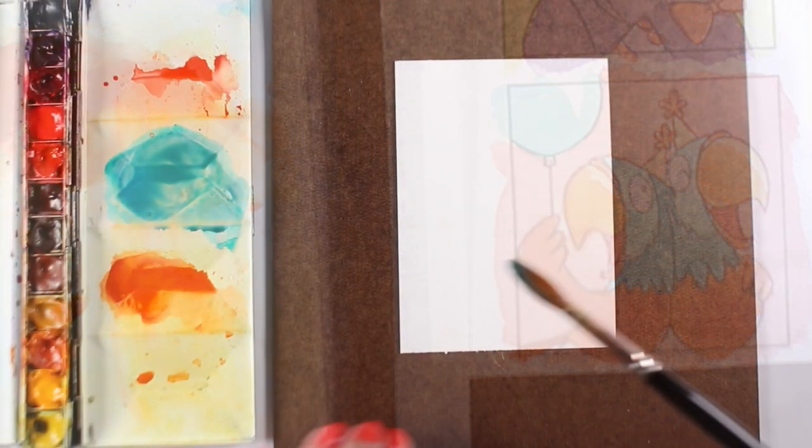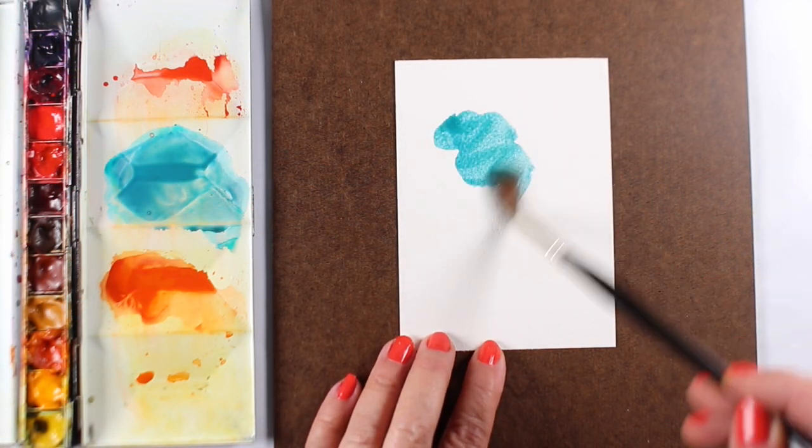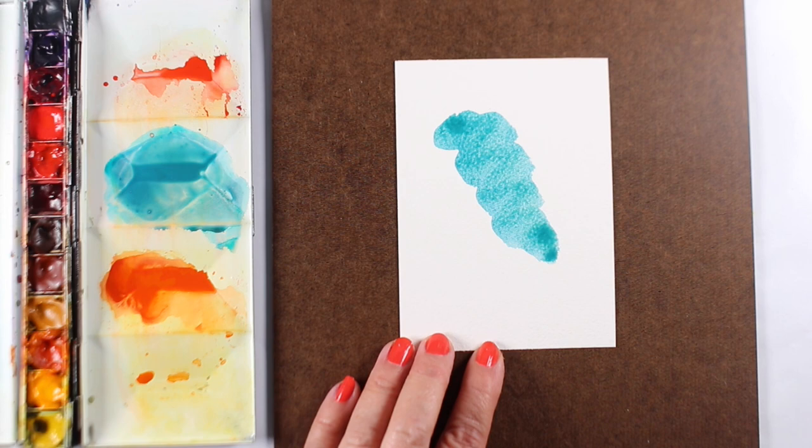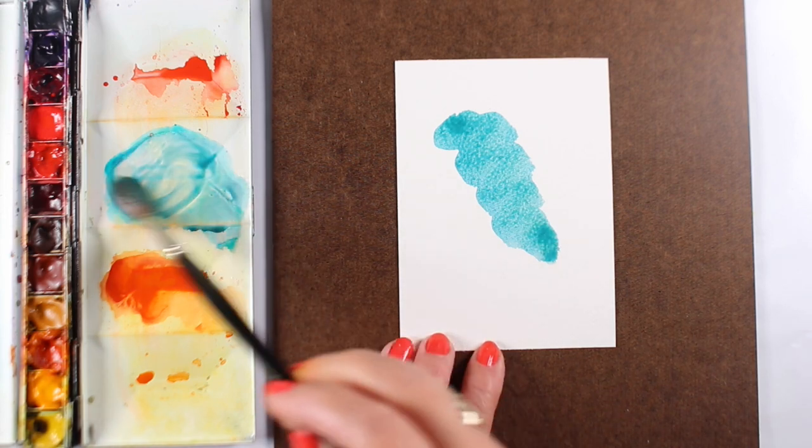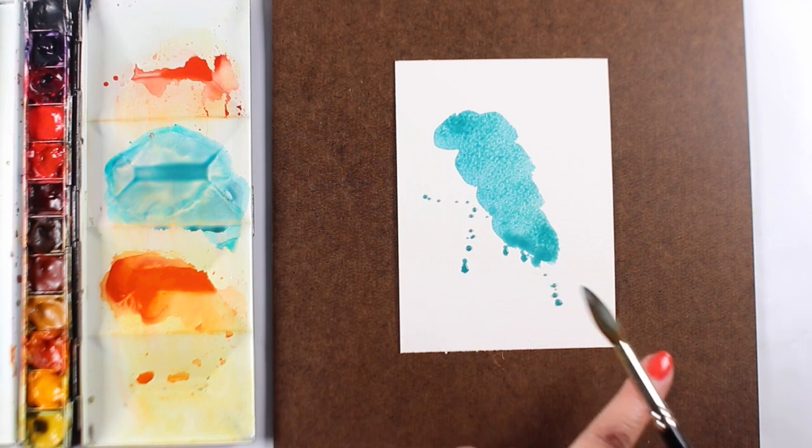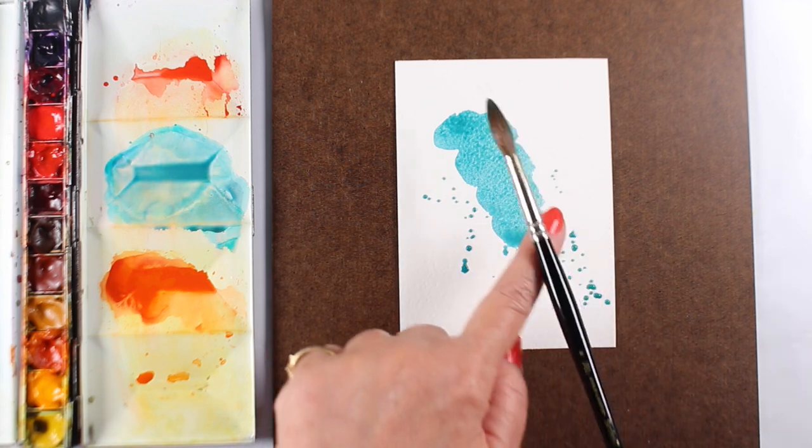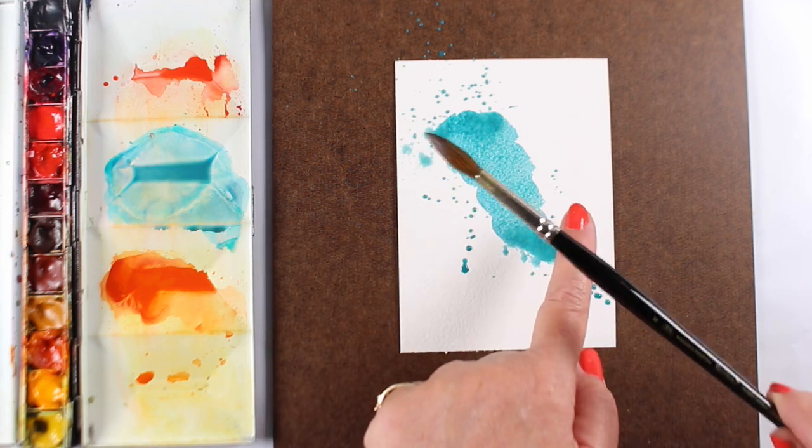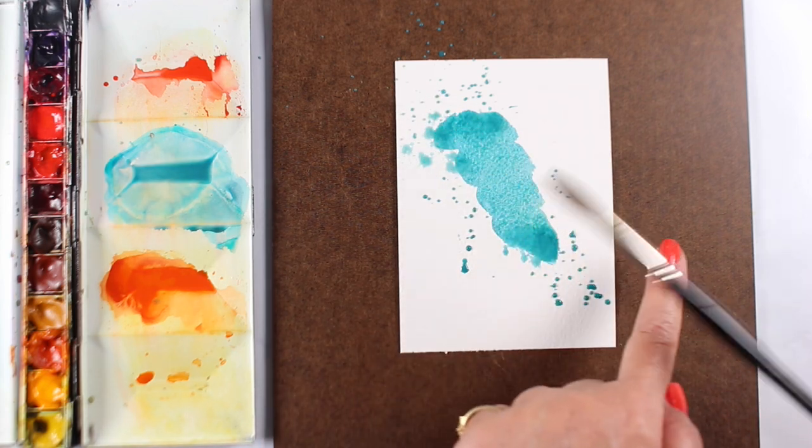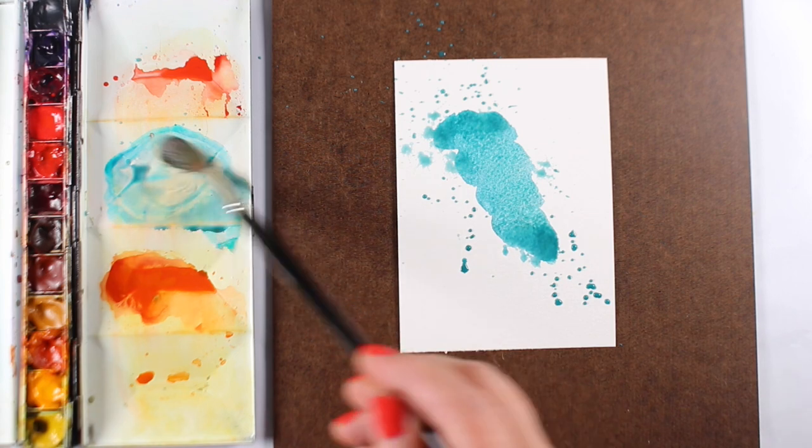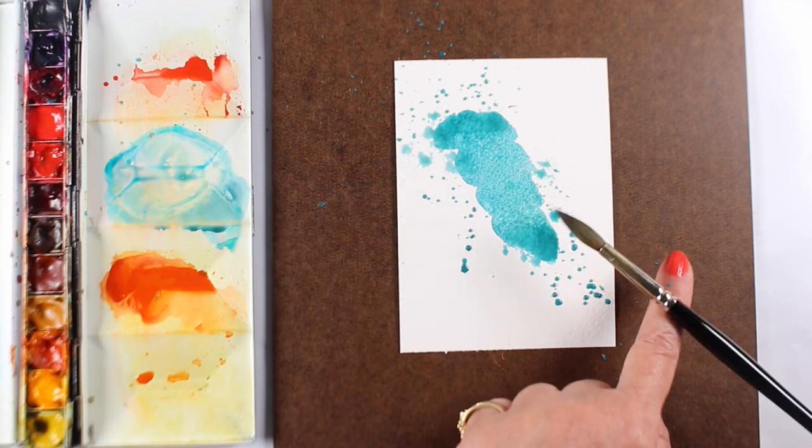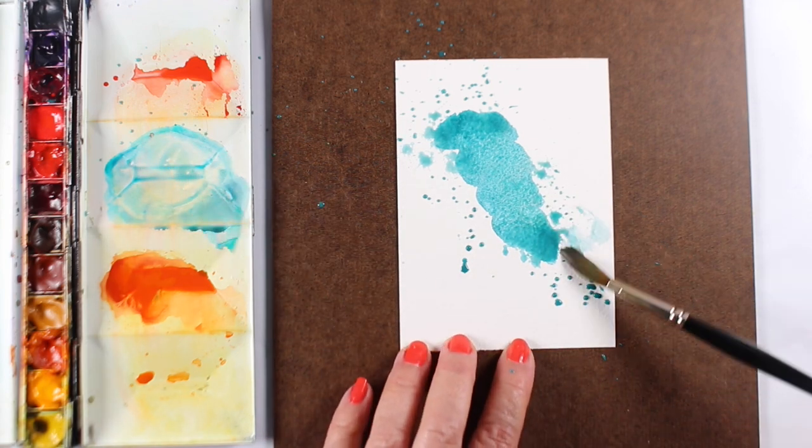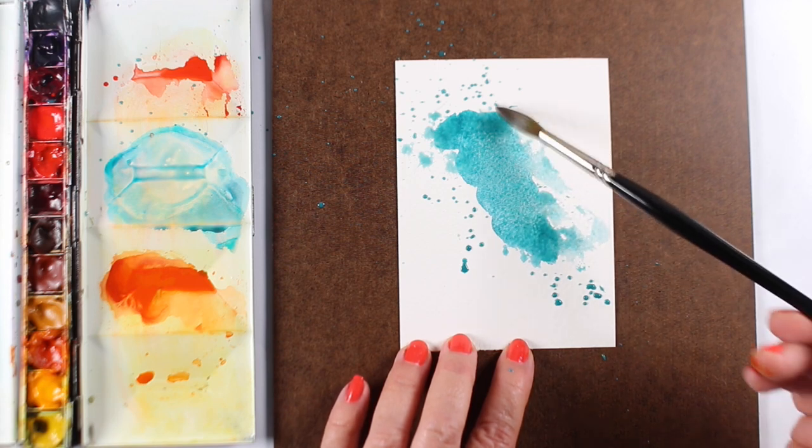However, there's something to be aware of with compliments and split compliments, which is that they neutralize each other. If you're ever trying to dull down a color for one reason or another, then you can mix the compliment with it. If you need to make a gray you don't have a gray in your palette, or you want to make a brown because you don't have the right brown, mix compliments together.